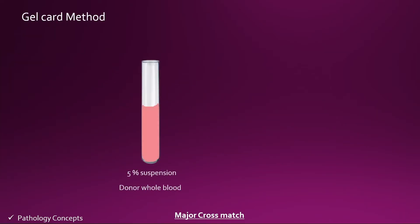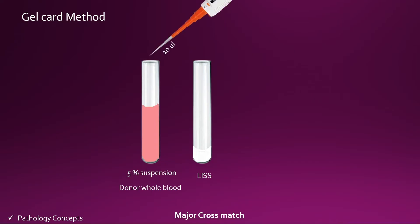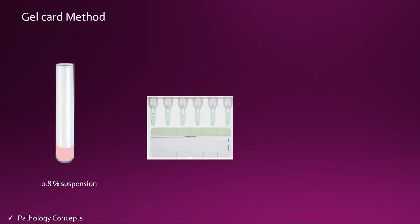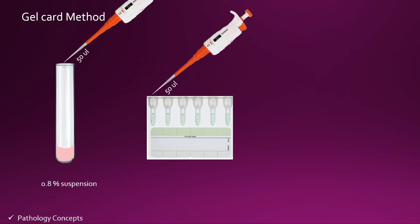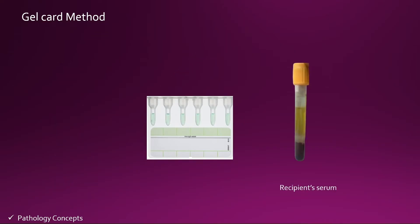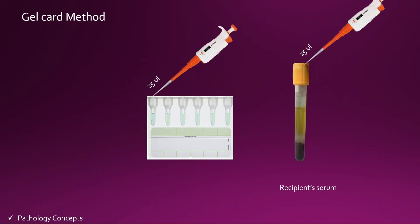Now let's learn the gel card method. First, take the 5% suspension of donor whole blood. Take 1 mL liss in another test tube. Add 10 microliters of 5% suspension from the donor whole blood to the liss test tube and make a 0.8% suspension. From this 0.8% suspension, add 50 microliters of RBCs into the gel card column. Now take the recipient serum, add 25 microliters of recipient serum into the same gel card column, incubate at 37 degrees for 15 minutes, and after 15 minutes centrifuge the gel card and read for reactions.